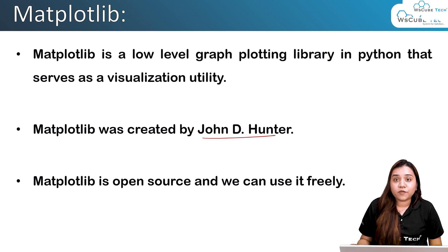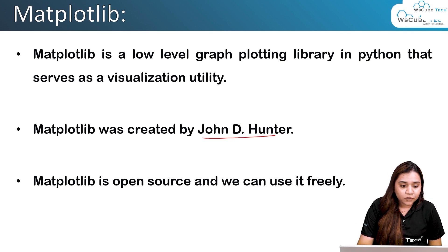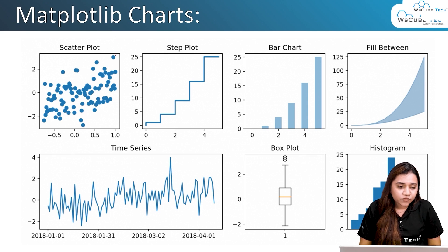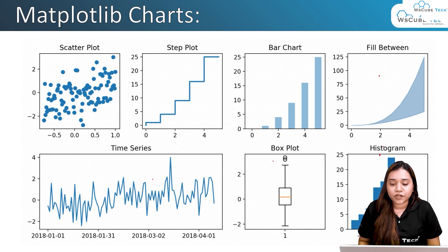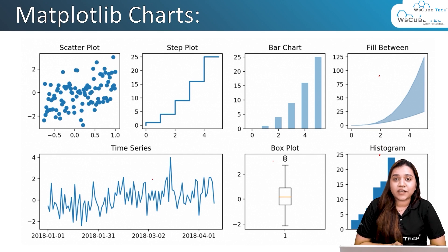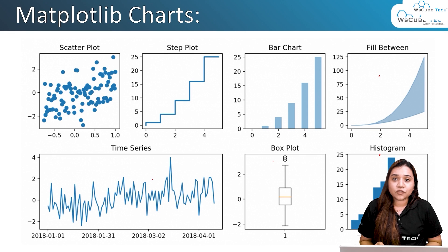What kinds of graphs can be created using matplotlib? There are many — some examples include scatter plot, where you have scattered data; step plot, a graph in the format of steps; bar chart; fill between; time series; box plot; and histogram. We also have pie charts and many more, which we will be learning throughout this module.